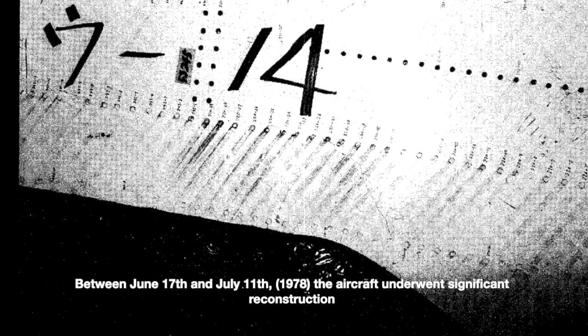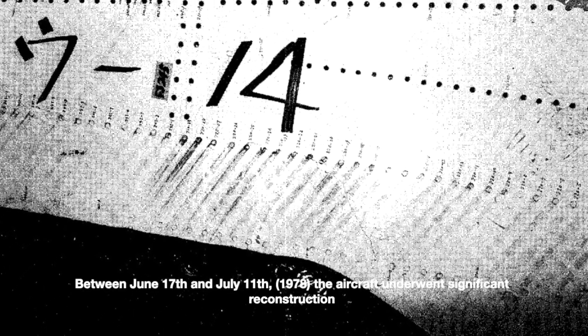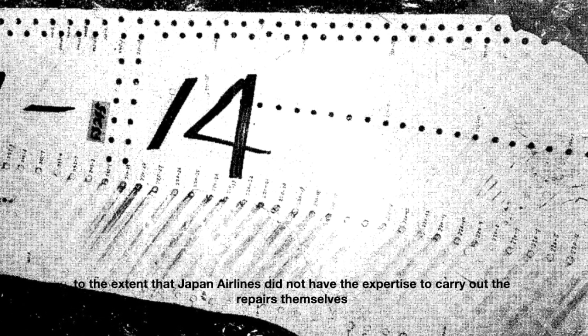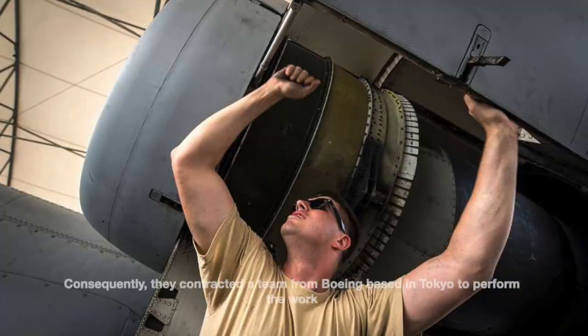Between June 17 and July 11, the aircraft underwent significant reconstruction to the extent that Japan Airlines did not have the expertise to carry out the repairs themselves. Consequently, they contracted a team from Boeing based in Tokyo to perform the work.